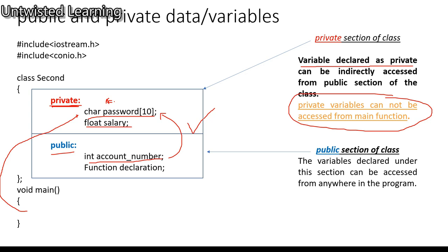The variables declared inside the private section can be accessed from the public section since the public section is inside the class. The scope of variables and functions declared in private can only be accessed within the class and cannot be accessed from the main function or other functions. Variables declared in the public section can be accessed from anywhere in the program — that is why it is called public.